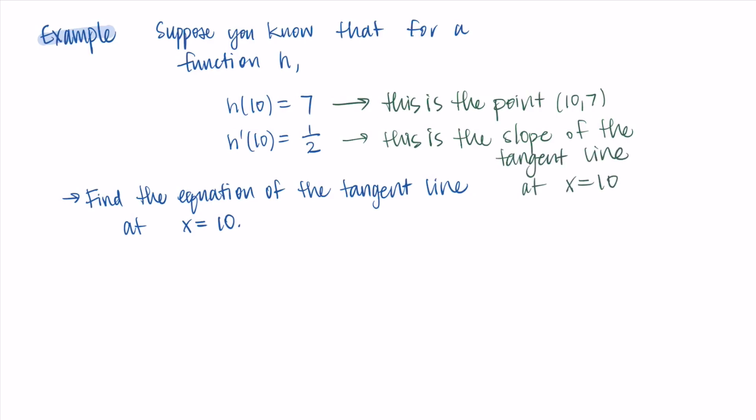The slope of the tangent line at x = 10 is 1/2. So really we have a point and a slope, and so we can use point-slope form. This time our function is h, so we have y - h(a) = h'(a)(x - a).